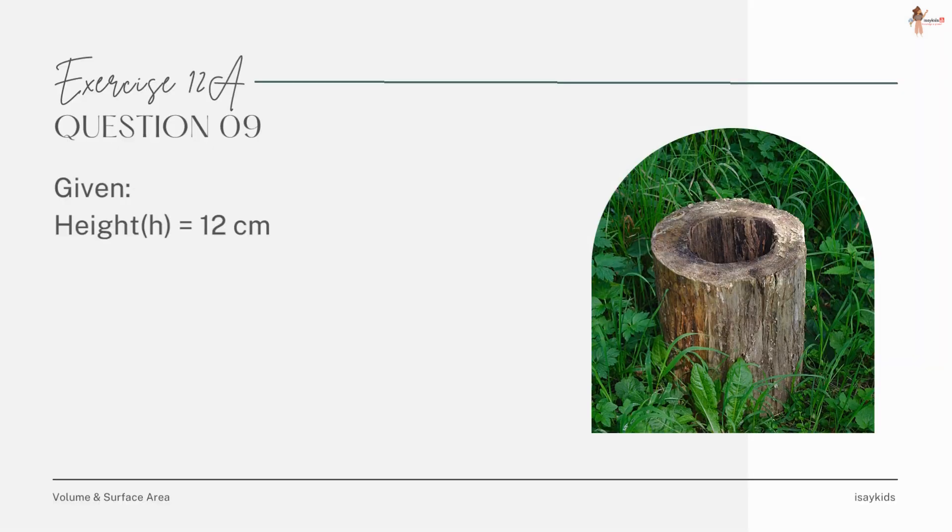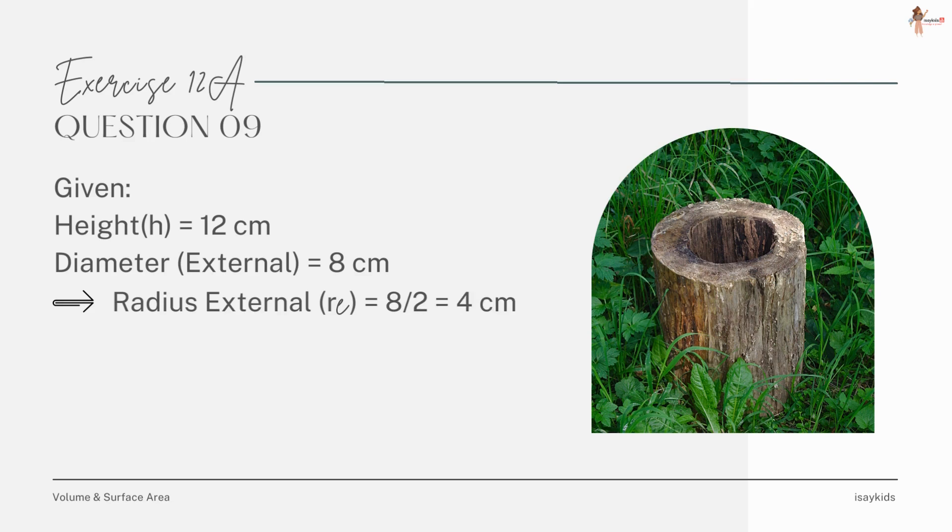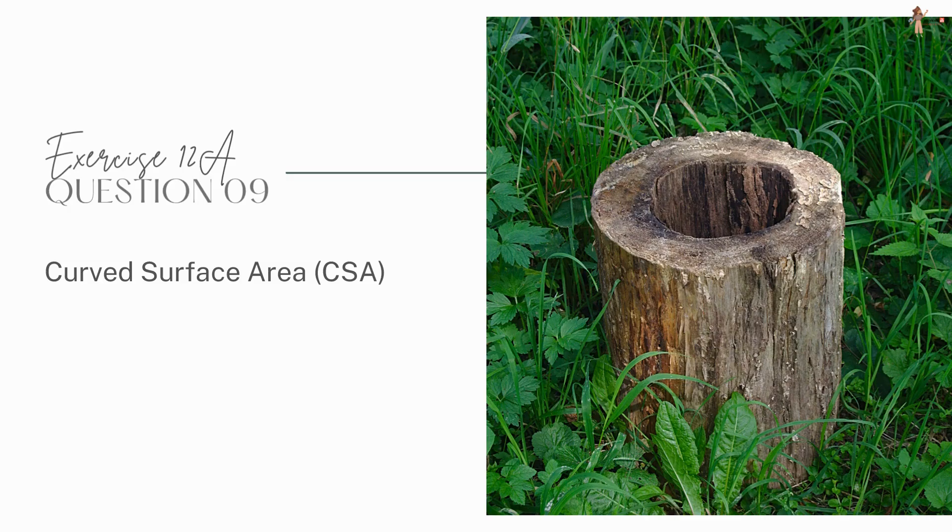We are given that the height of the cylinder is 12 centimeters, external diameter is 8 centimeters, and hence the external radius is 4 centimeters. The thickness is 2 centimeters, which means that the internal radius is 4 minus 2, that is 2 centimeters.